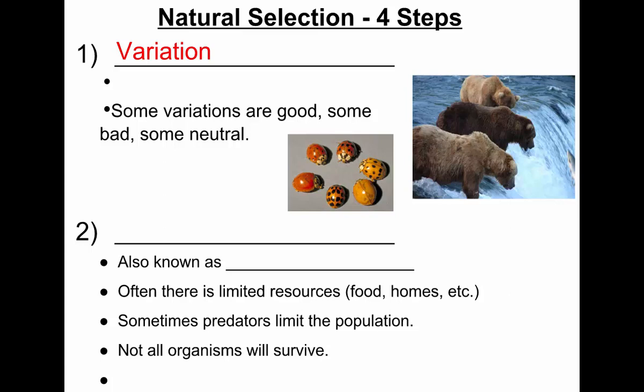We can perceive variation amongst ourselves very easily — we look around the room and say everyone in here is very different from each other. But all species are like that. You may think squirrels all look identical, but they have just as much variation as we do. We just don't perceive it well. We probably all look identical to squirrels. Every individual is unique.